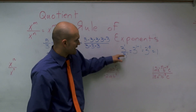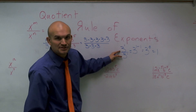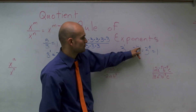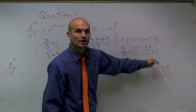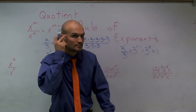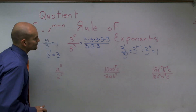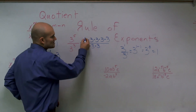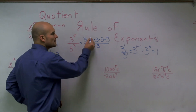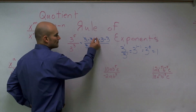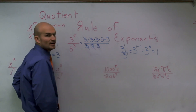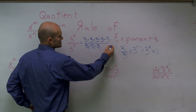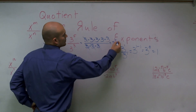Think about that: 3 to the first divided by 3 to the first — we know that answer is 1. But if you do your rules of exponents, 3 to the 1 minus 1 is 0, and 3 raised to 0 equals 1. Once we know that, those cancel out to 1, those cancel out to 1, and those cancel out to 1. Therefore, I'm only left with 3 times 3, which is 3 squared.